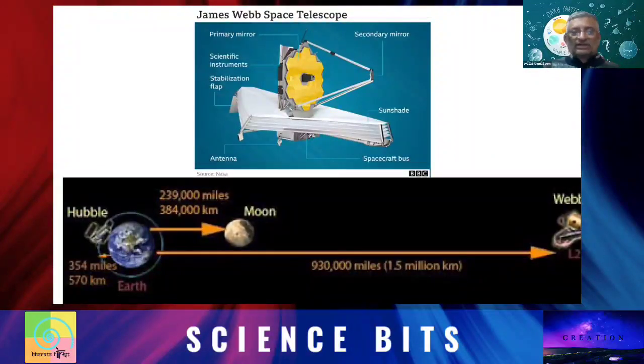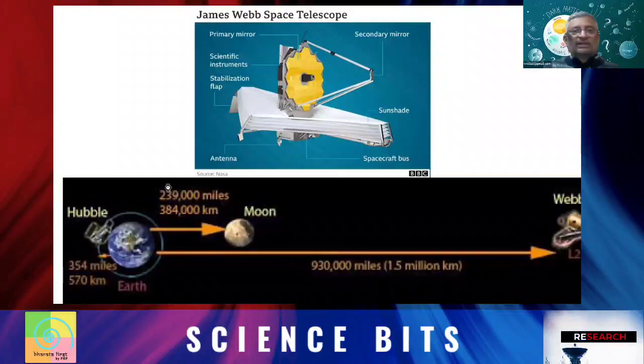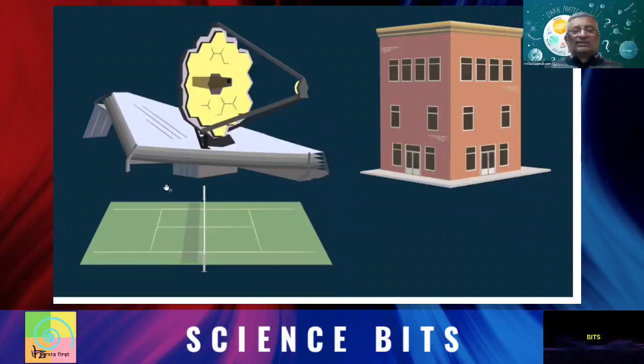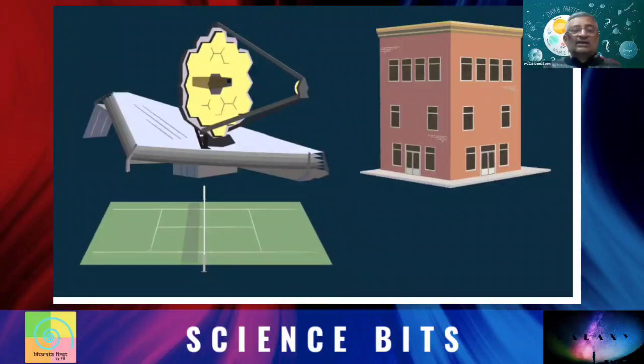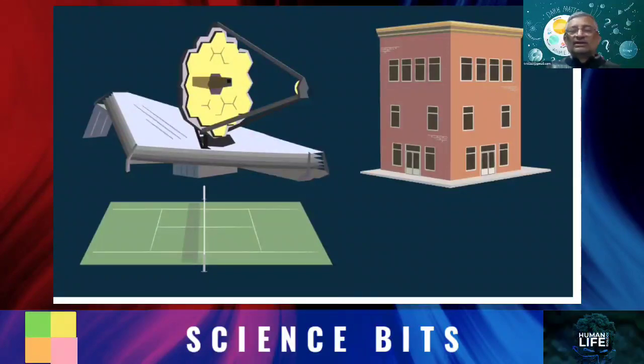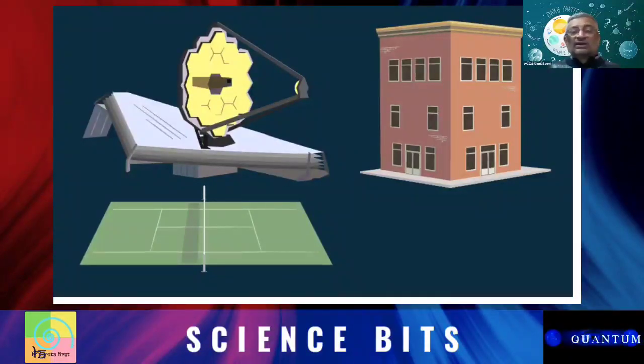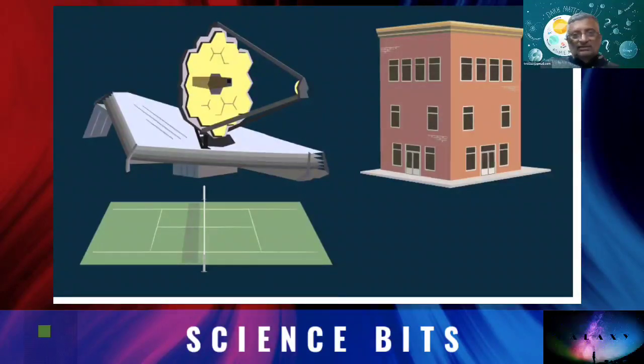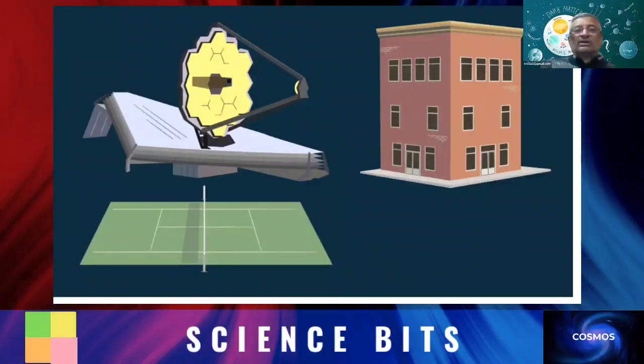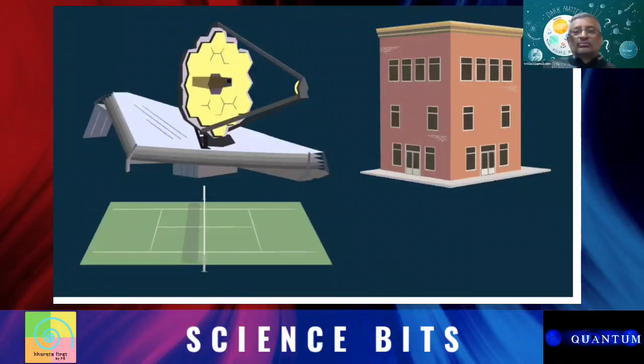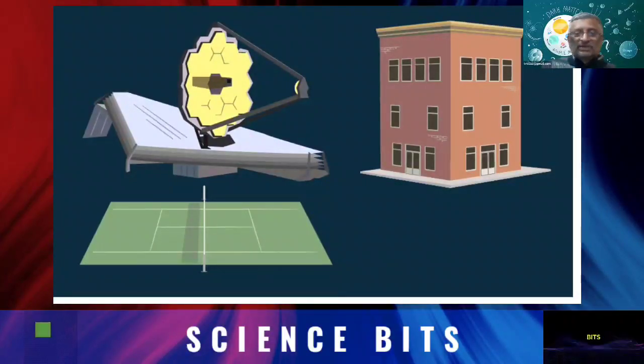That will be the location where the Space Telescope will be placed. If you look at this Space Telescope, the size is roughly tennis court size. Particularly that tennis court size is the size of the reflector which will prevent the sun's rays from hitting the telescope, so that it can keep the telescope at really low temperatures.